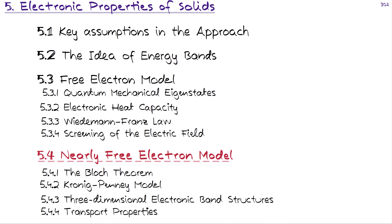Remember in section 5.3, focusing on the free electron model, the potential was zero. Now we are going beyond that assumption. During this derivation of the Bloch theorem, we will also transform the Schrödinger equation, which is a differential equation, and we will turn that into an algebraic equation known as the central equation.